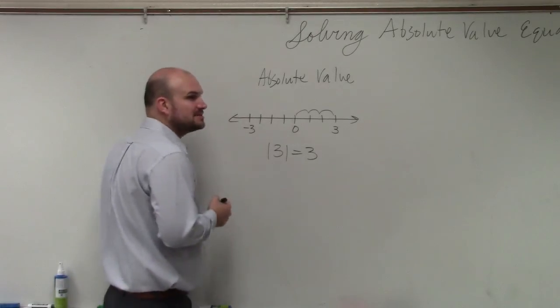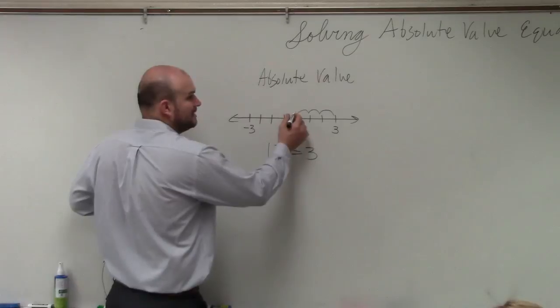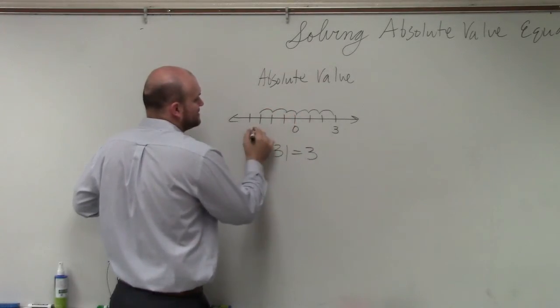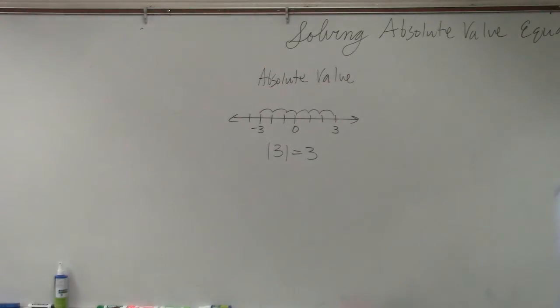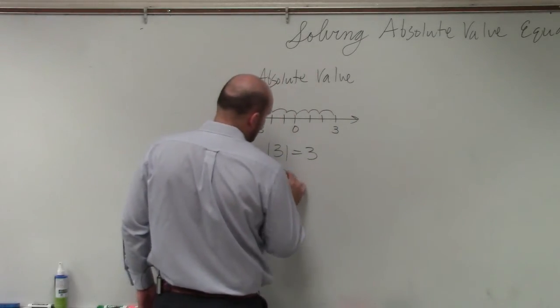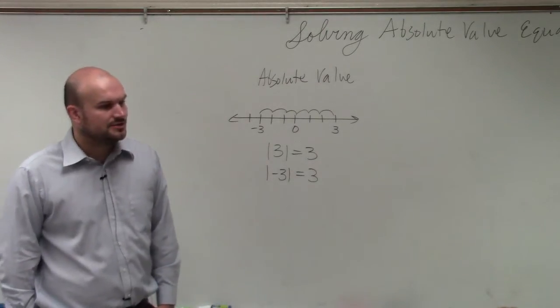Now, what about instead of going in the positive direction, let's say you go in the negative. This is negative 3. Let's say you go in the negative direction. If you travel three units in the negative direction, how far did you travel? You still travel three units. So we'd represent that as the absolute value of negative 3 is equal to 3.